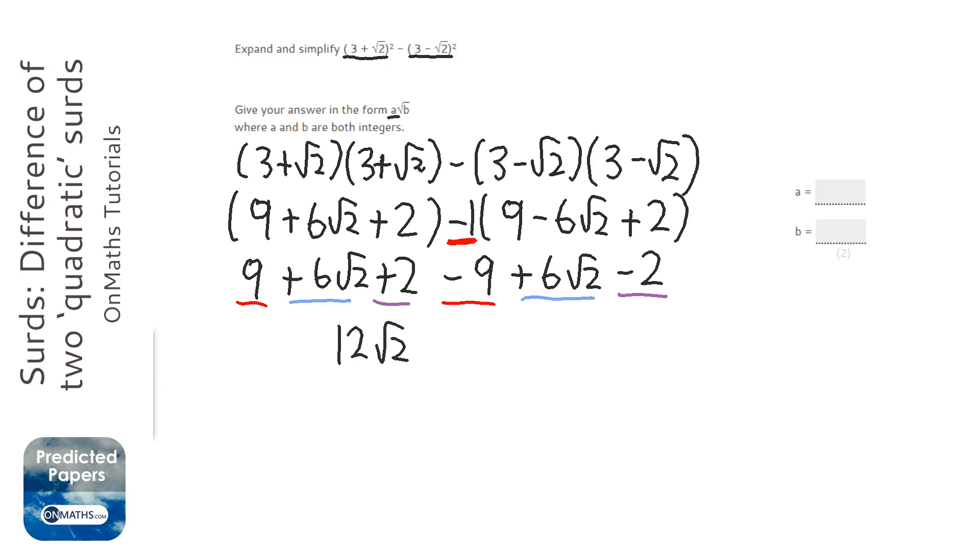Now, it says it wants it in the form A root B. So A is the number outside the third, which is 12. And B is the number inside the third, which is 2.